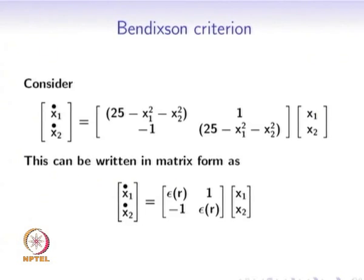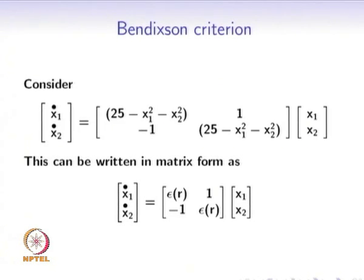First, we will consider the Bendixon criteria. Here are the state equations of an example. In the matrix we can see the function 25 – x1² – x2², which is dependent on both x1 and x2. If the radius is R, then x1² + x2² = R², so the function 25 – x1² – x2² can be written as 25 – R². The state equations reduce to a form dependent on R, represented as ε(r).